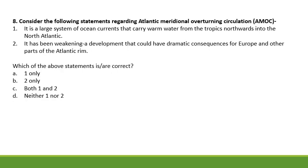Next, consider the following statements regarding the Atlantic Meridional Overturning Circulation (AMOC). Statement one: AMOC is a large system of ocean currents that carry warm water from the tropics northwards into the North Atlantic. Statement two: AMOC has been weakening — a development that would have dramatic consequences for Europe and other parts of the Atlantic rim. Both statements are correct.